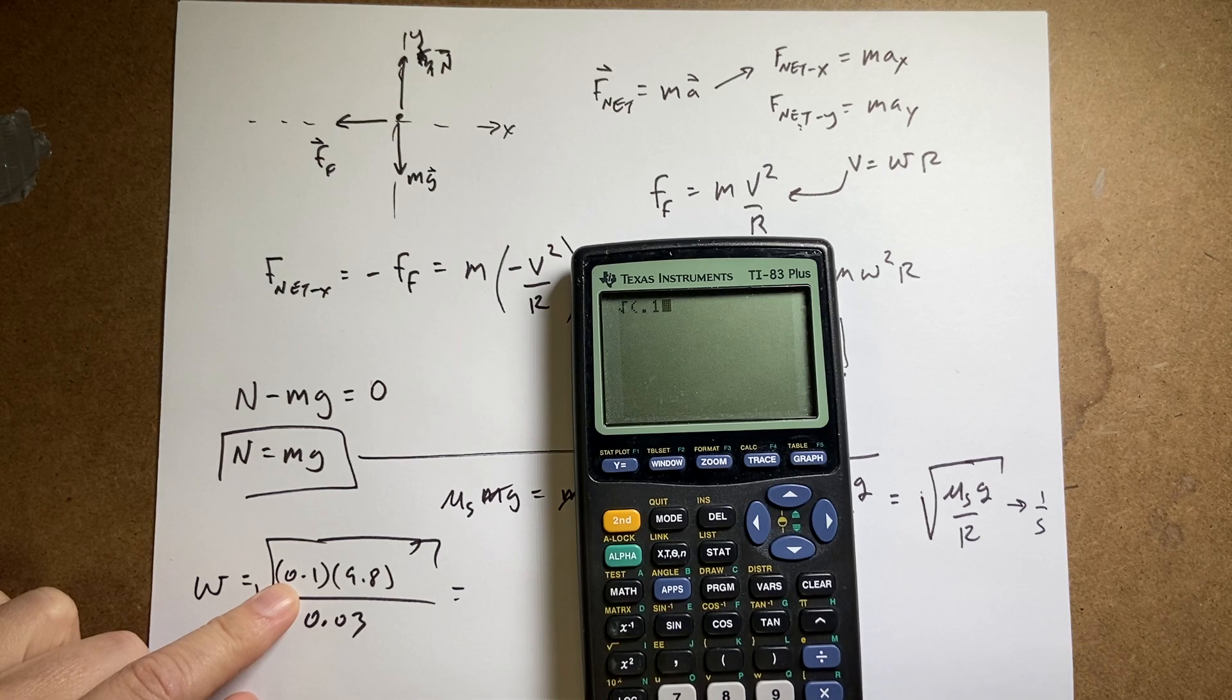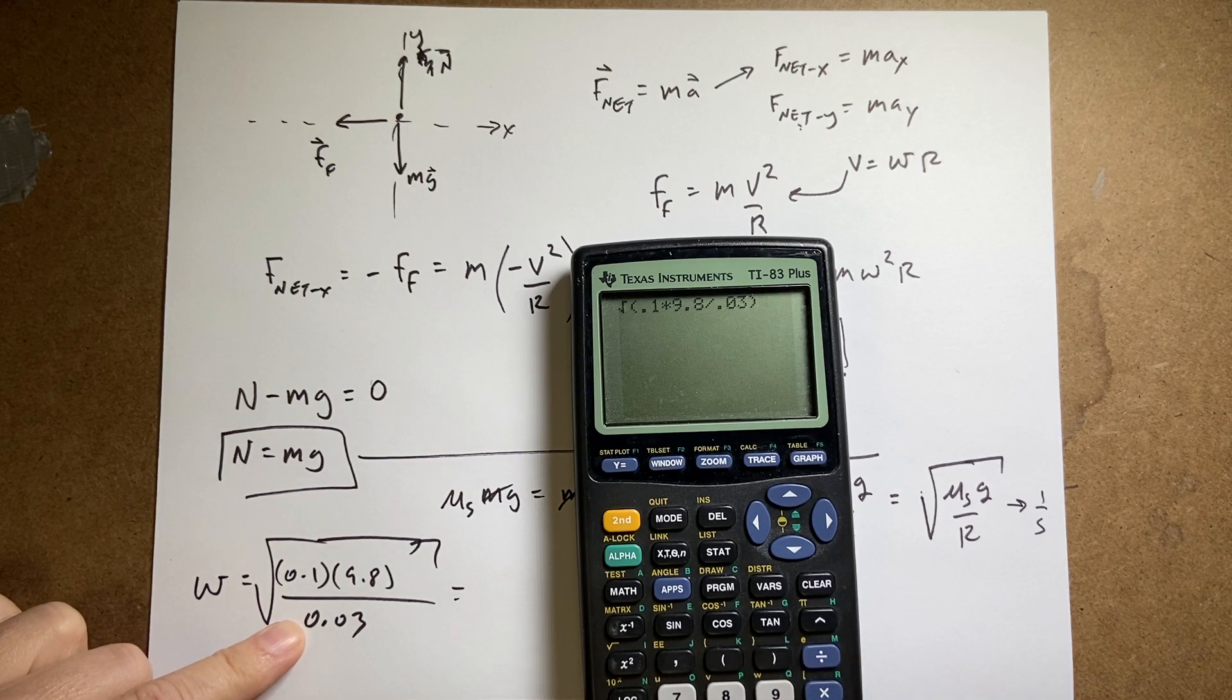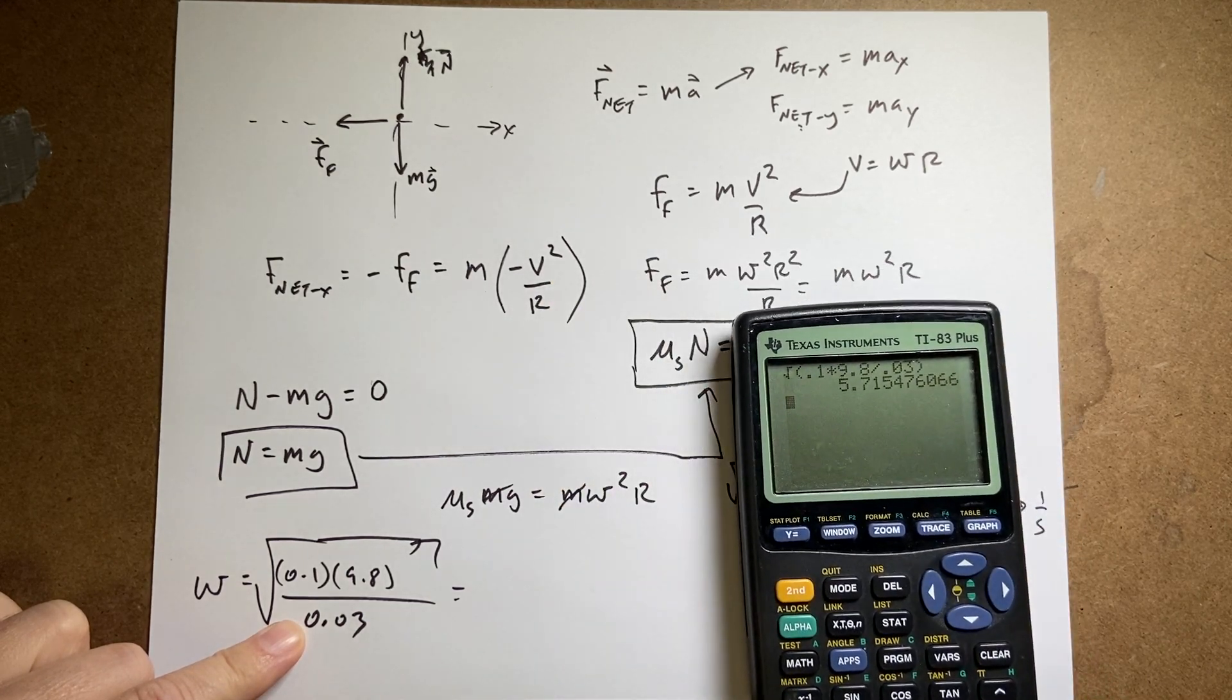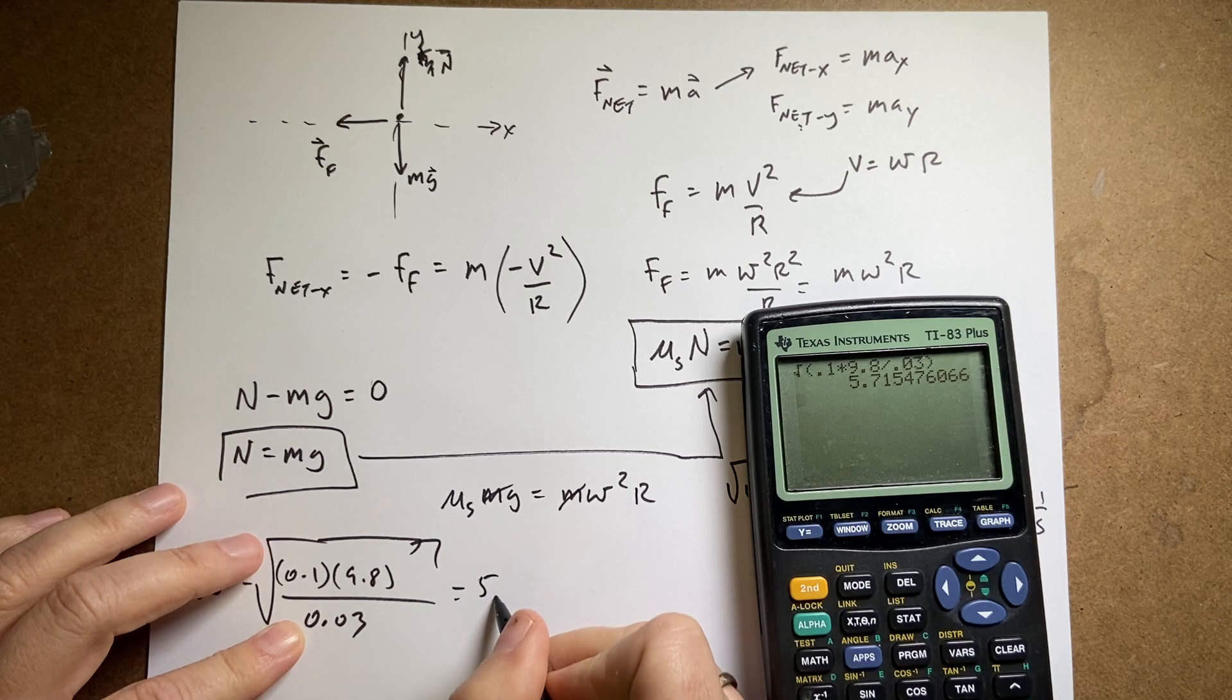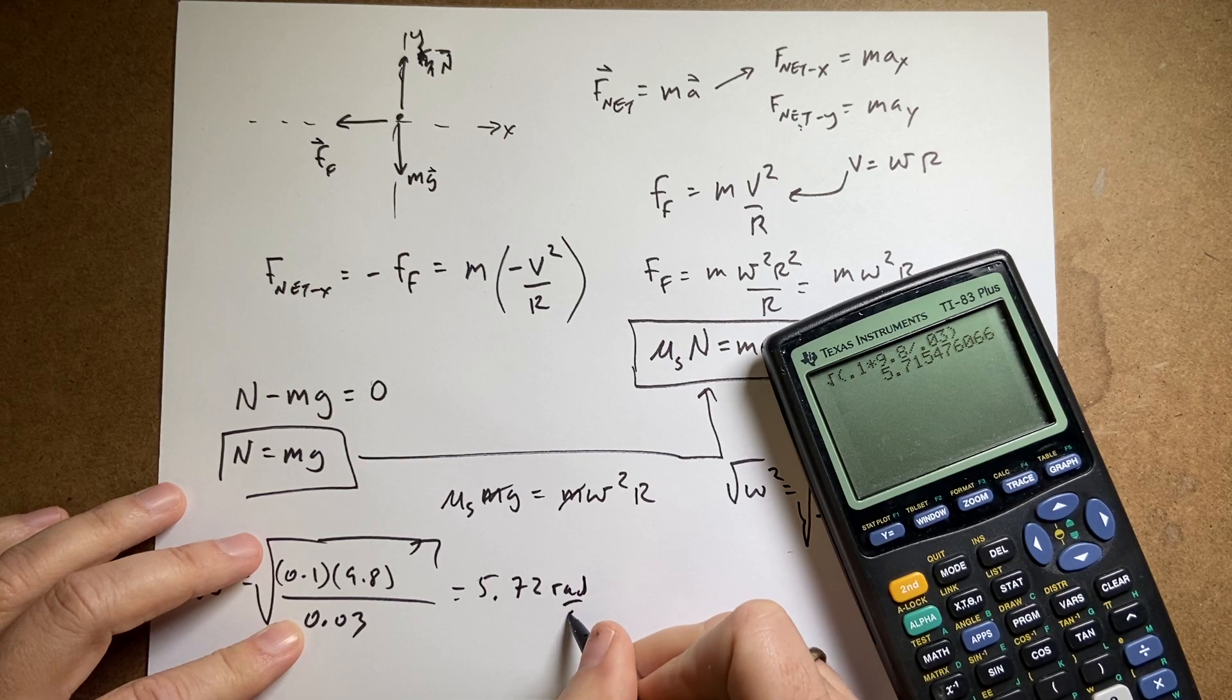of 0.1 times 9.8, which I could have done in my head, divided by 0.03. And I get 5.72 radians per second.